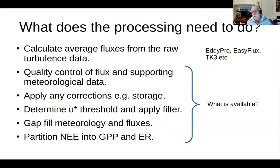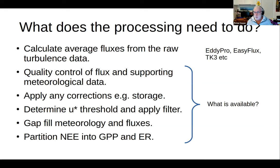For this talk, we're going to concentrate on the processing path. What does the processing need to do? First, we've got to convert turbulence data recorded at 10 or 20 Hz into fluxes averaged over 30 minutes. I'm not going to speak about that process because there's EddyPro, EasyFlux, TK3, and others that already do that for you. I'm assuming you're starting from the point of having fluxes averaged over 30 or 60 minutes. After that, we have to quality control the flux data and the supporting meteorological data — because the flux data is always noisy, even after applying EddyPro QC flags.